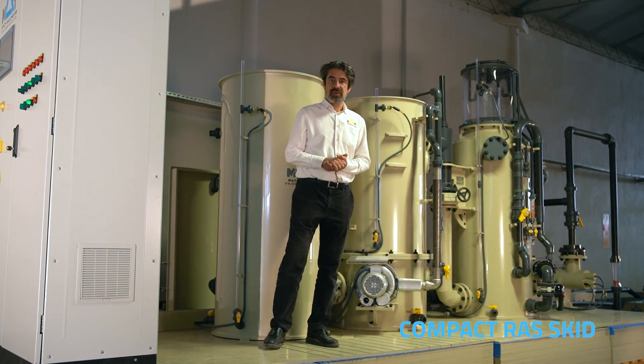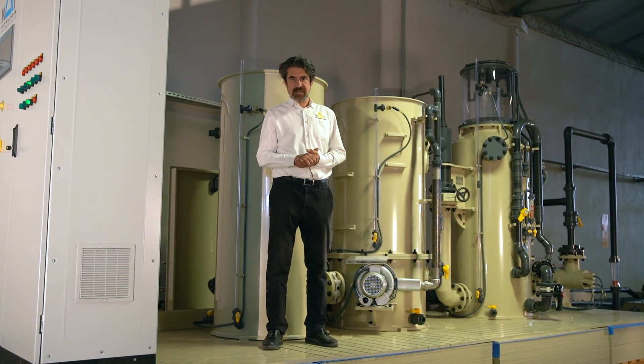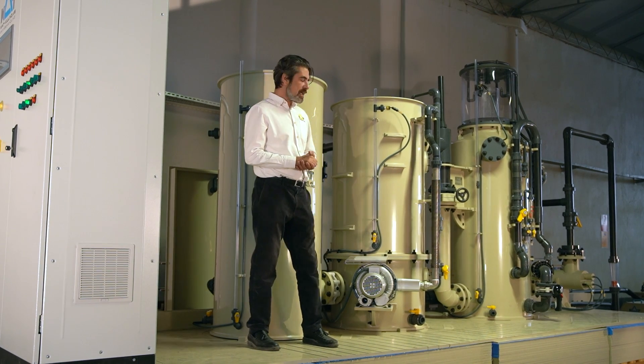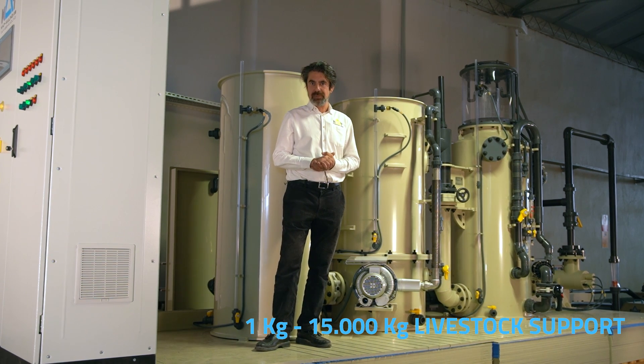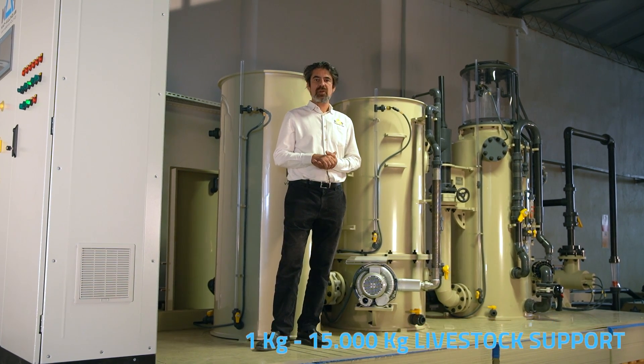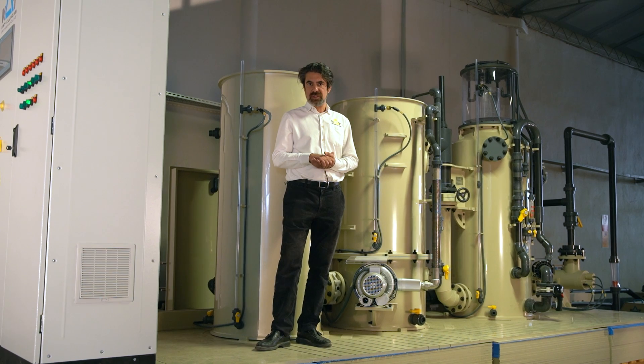RAS is standing for Recirculated Aquaculture Systems, and this specific skid is capable to hold a thousand kilograms of livestock. Our unit is capable to handle up to 15,000 kilograms.